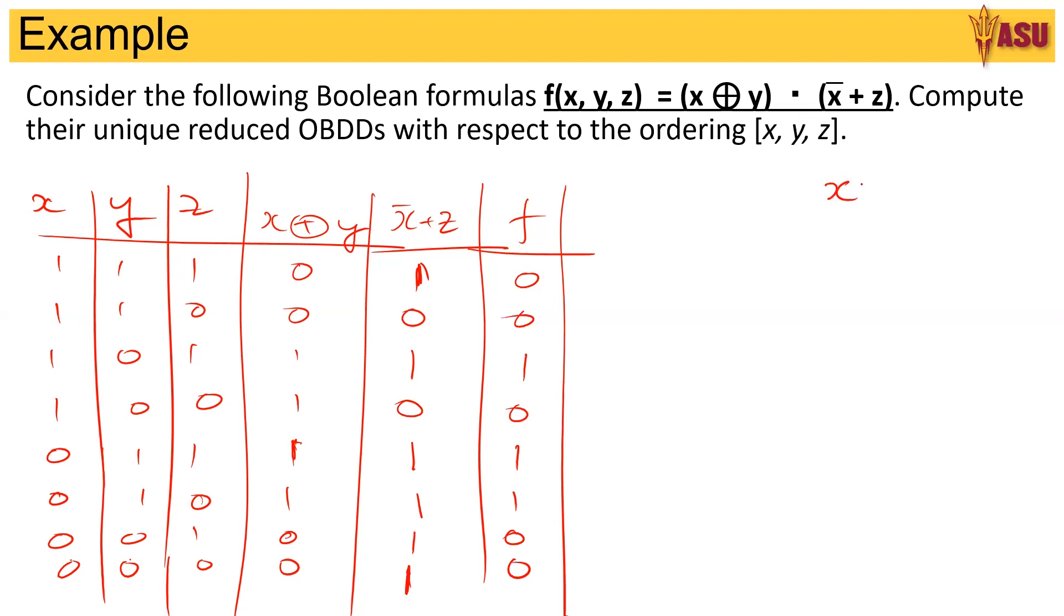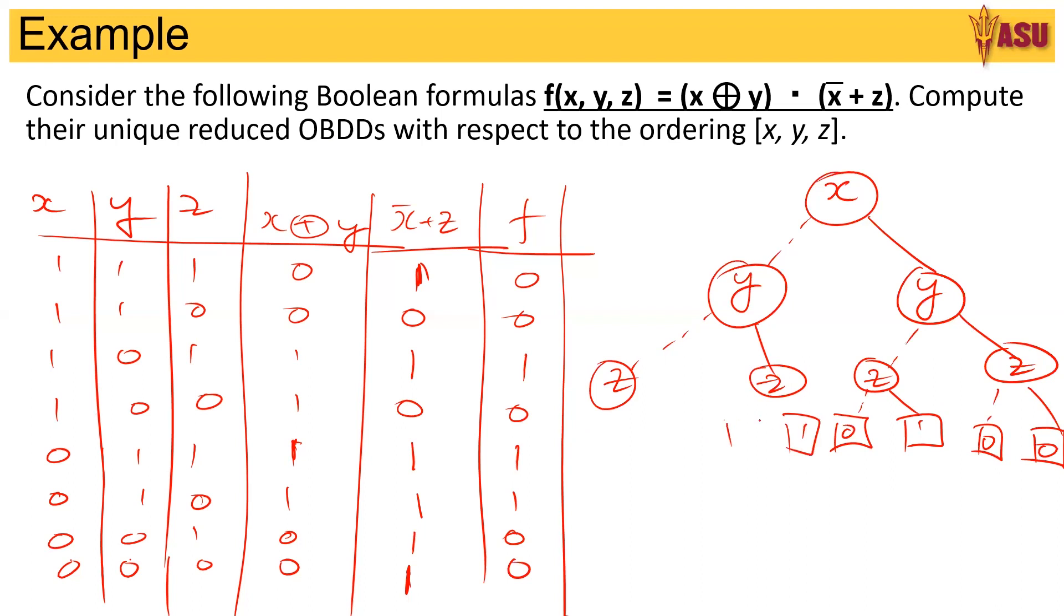So we are starting with x. Then we have y, so this is on a 1 and this is on a 0 and then z, 1, 0, 1, 0. Then finally we have our 0s and 1s. So I am going to do this quickly and if you want to have a look at how this is done, it is better you look at example set 1. So this is the initial ordered binary decision diagram.